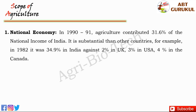For example, in 1982, it was 34.9% in India against 2% in UK, 3% in USA, and 4% in Canada. This indicates that the more advanced the stage of development, the smaller is the share of agriculture in national income.